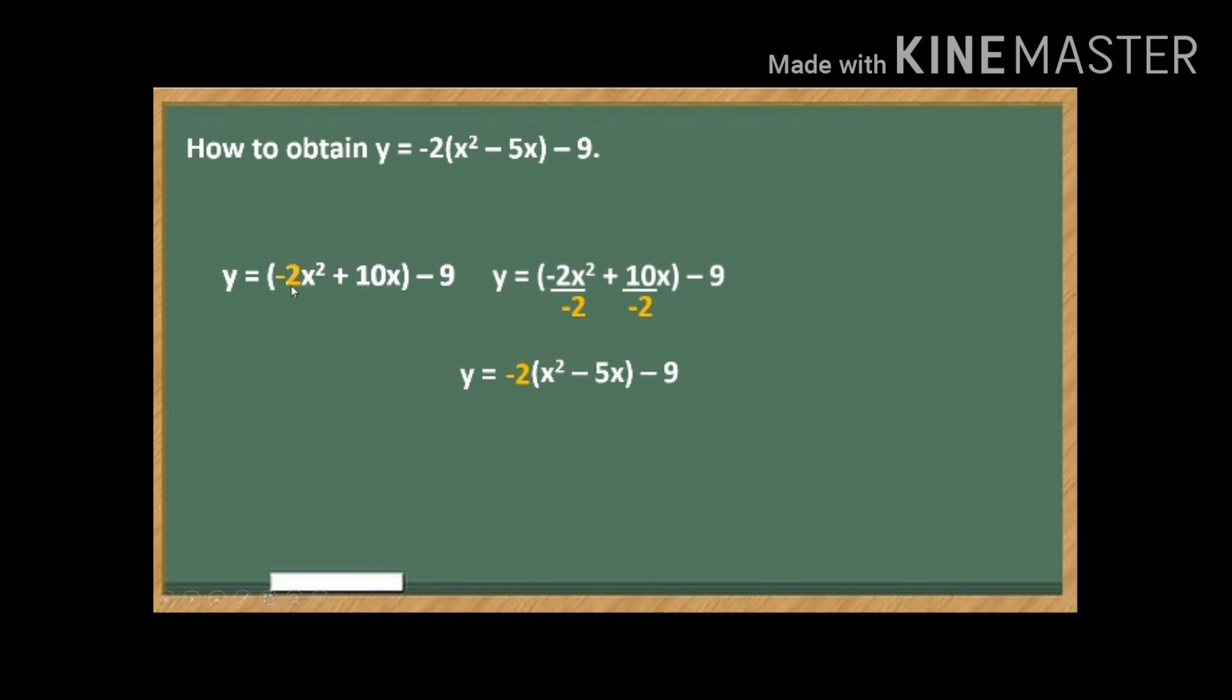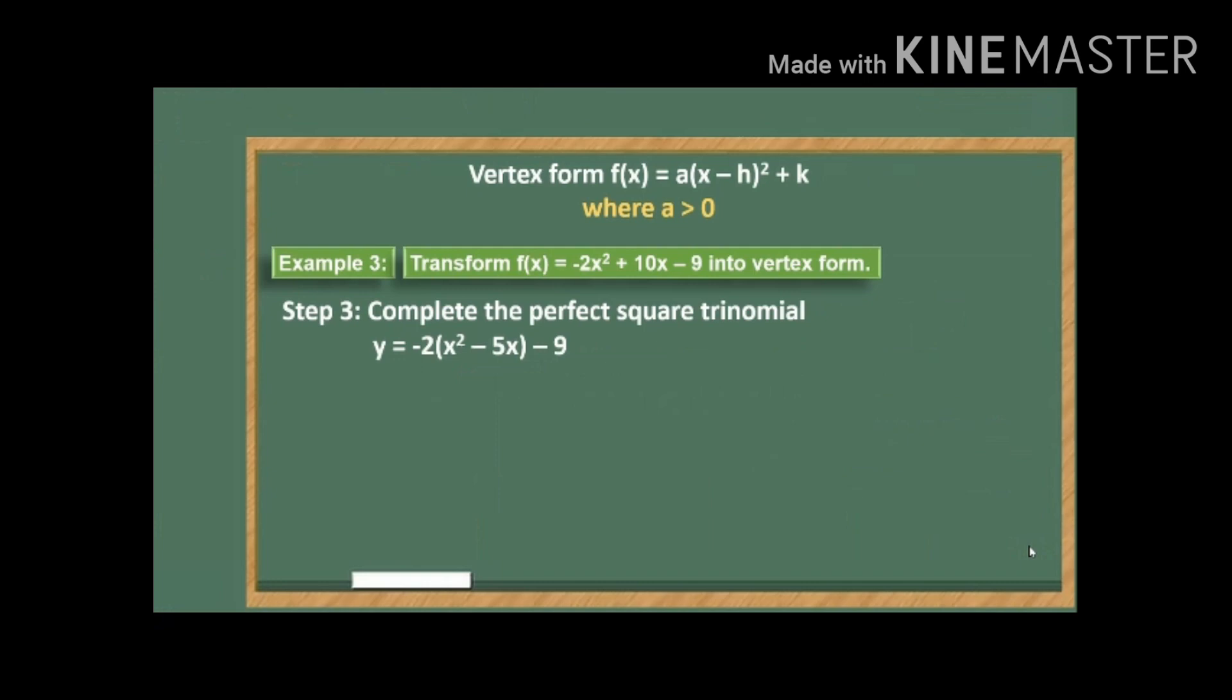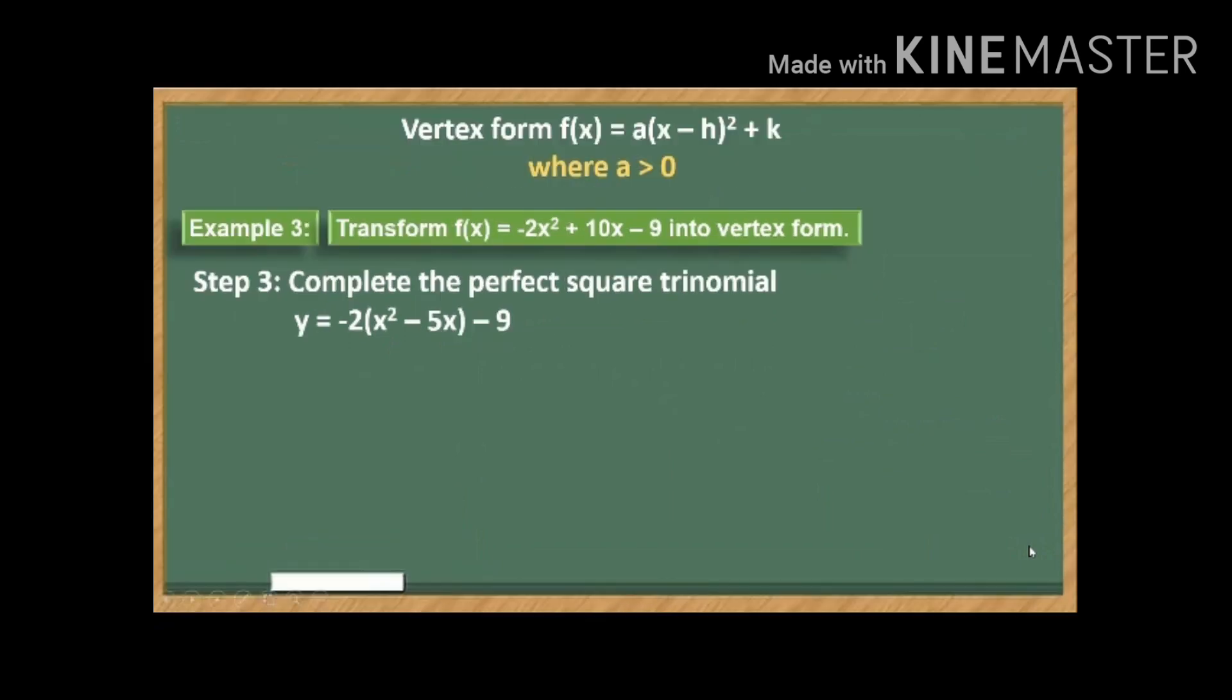So for step 3, we have here, complete the perfect square trinomial. So x squared minus 5x is not yet complete because there is no constant term. So now this is now the expression when you complete the perfect square trinomial. How we get this, how do we have plus 25 over 4 and plus 25 over 2? Let me show you.